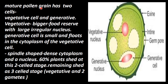The mature pollen grain has two cells inside. One is the vegetative cell, which is a very big cell. The other is the generative cell, which lies within the vegetative cell. The vegetative cell is bigger and has a food reserve with a large irregular nucleus.